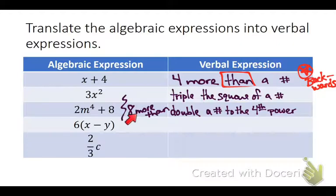So to rearrange, I could put 8 more than double a number to the 4th power. Because then I would be working backwards for this piece.